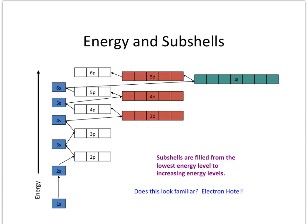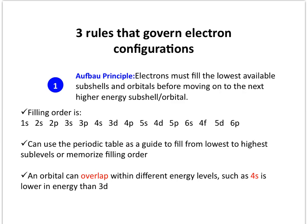The filling order looks very similar to the electron hotel. The filling order is: 1s, 2s, 2p, 3s, 3p, 4s, 3d, 4p, 5s, 4d, 5p, 6s, 4f, 5d, and 6p. Sub-shells are filled from the lowest energy level to the higher energy levels — this is called the Aufbau principle. Electrons must fill the lowest available subshells and energy levels before moving on to the next higher energy sub-level.